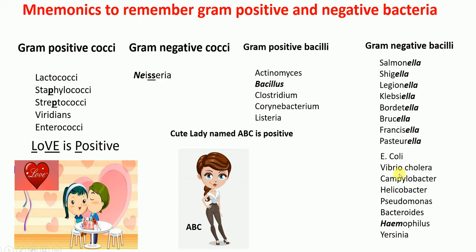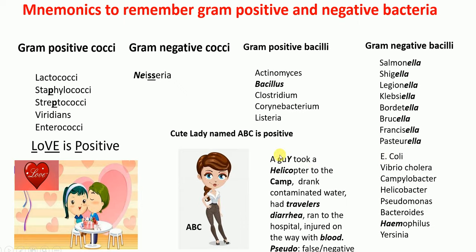But how do you remember the second list? I have a mnemonic — a story. There is a guy who took a helicopter to the camp. In the camp he drank contaminated water and got traveler's diarrhea. Because of the diarrhea he had to run to the hospital.